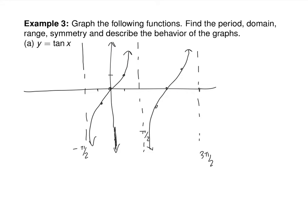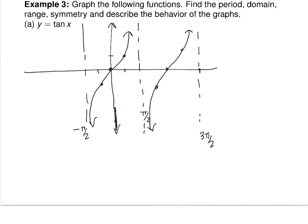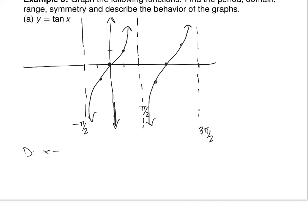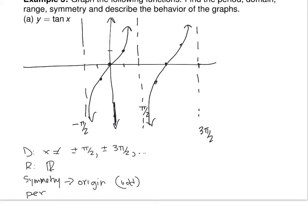For the domain of tangent: give a comprehensive list of what x cannot equal — plus or minus pi/2, plus or minus 3pi/2, and so on. The range: this function has no lowest or highest value, so the range is all real numbers. For symmetry: it's symmetric about the origin — we already proved it's odd. The period: from negative pi/2 to pi/2, you go half a pi and then another half a pi, so the length of one cycle is pi.